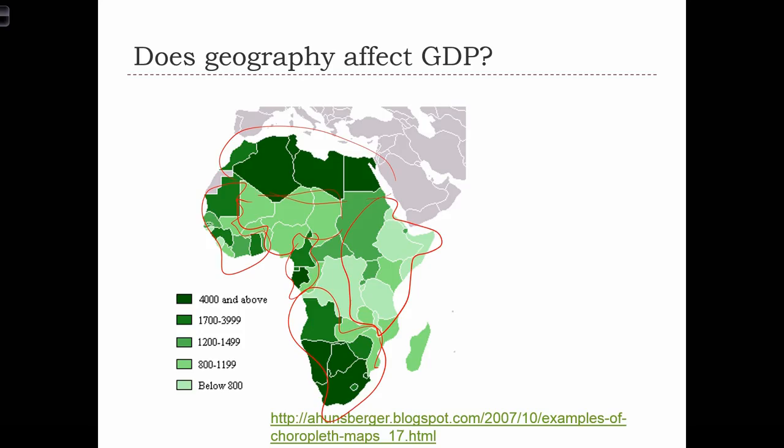Now, these patterns, if they really do exist, indicate some sort of social or economic processes that are causing the values of GDP to arrange themselves in this way. So, in this case, what might those processes be?